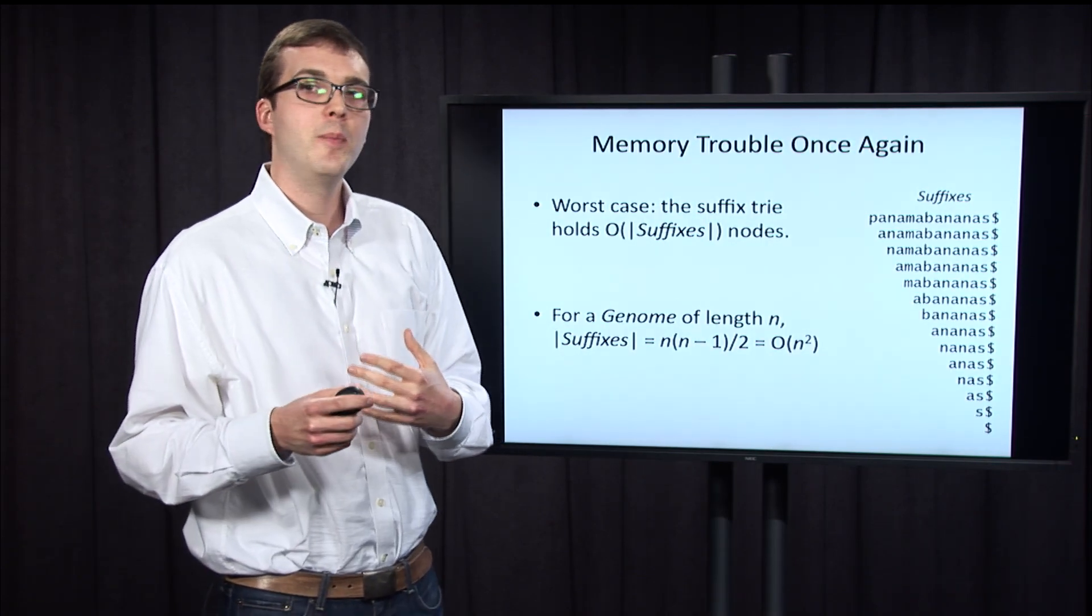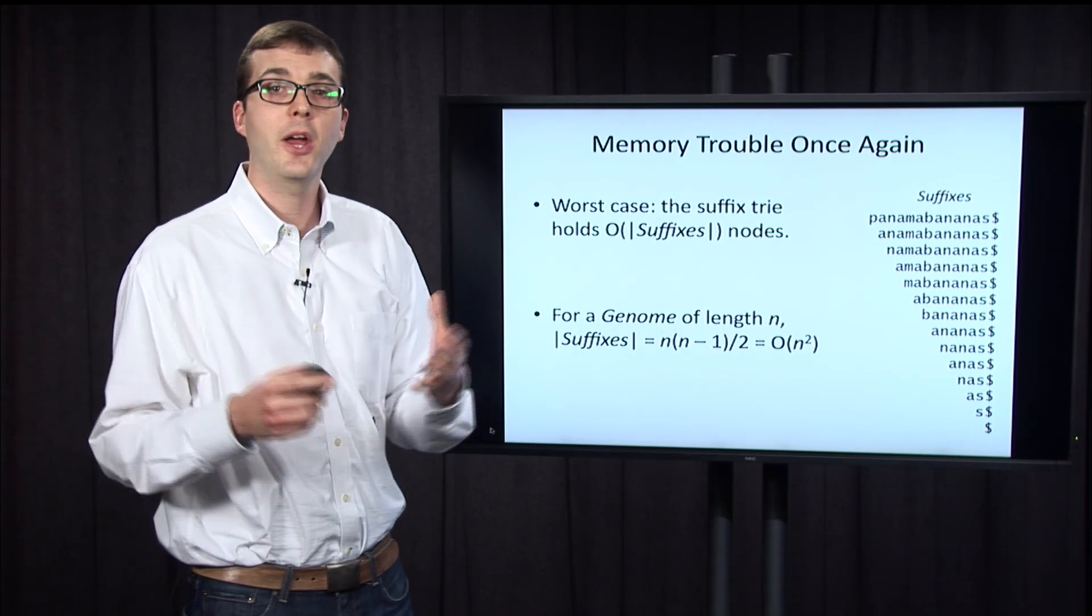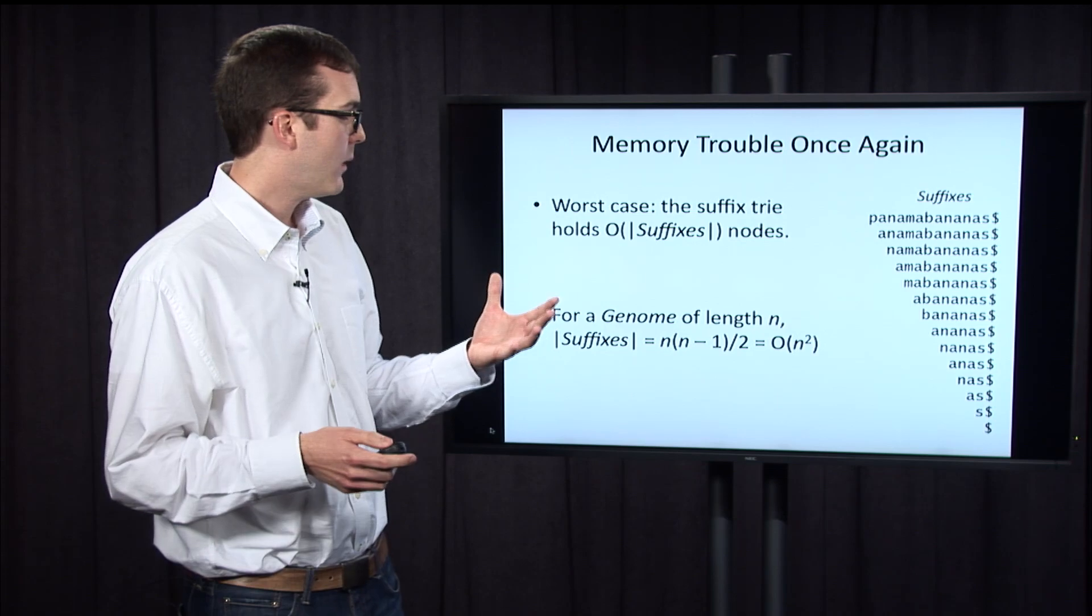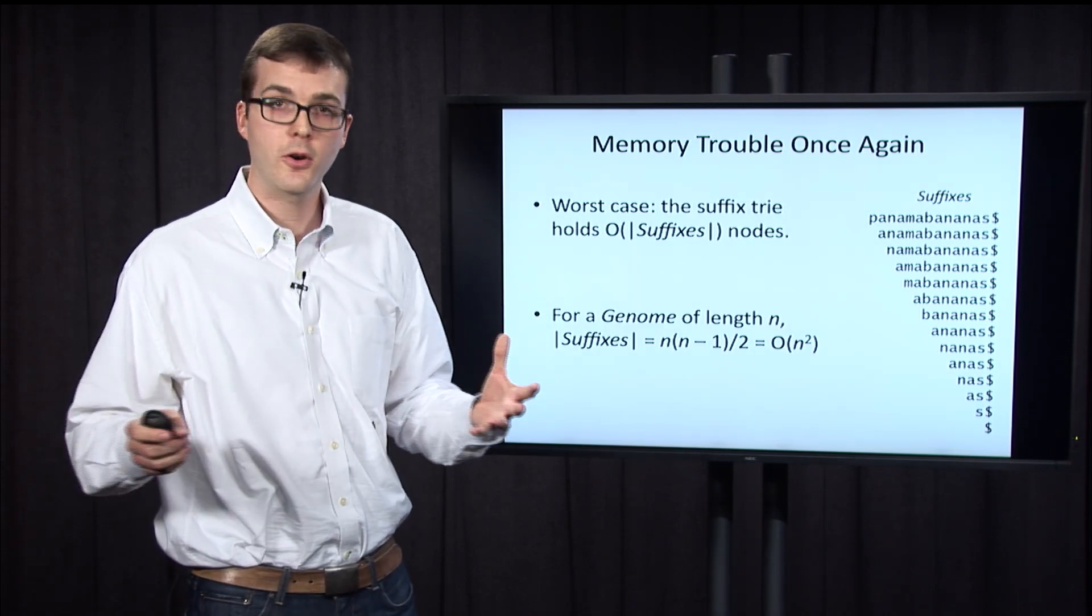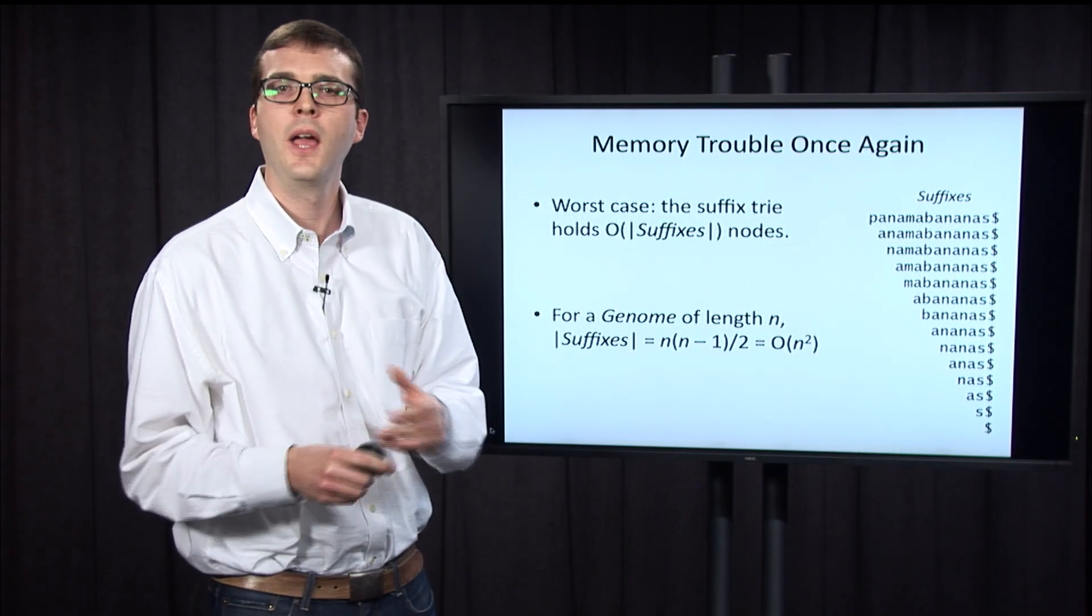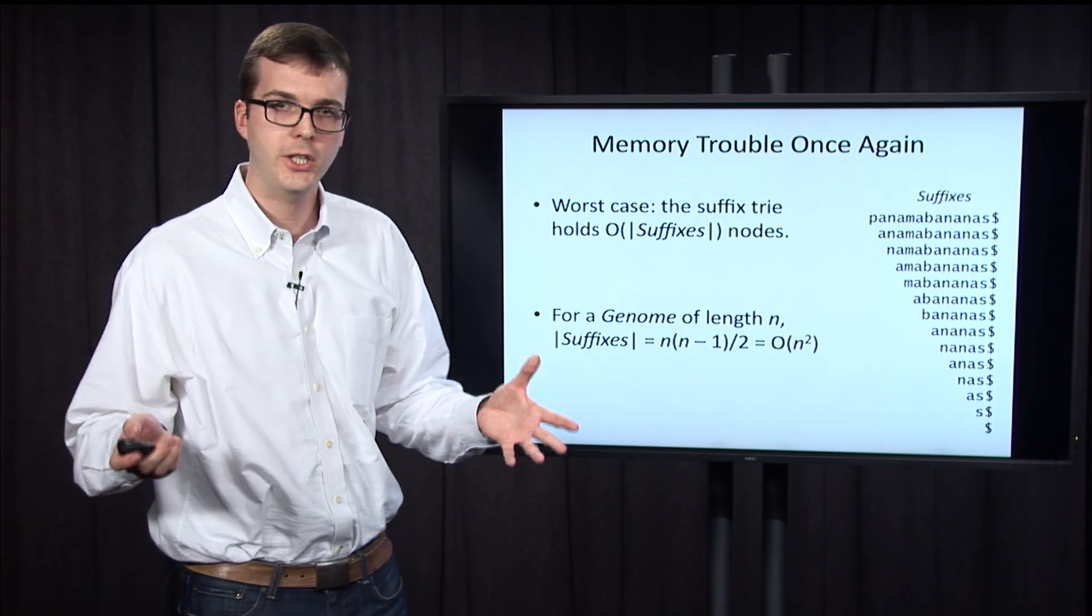The issue, though, would be that you may have noticed that the suffix trie is bigger than the original trie that we had for the patterns. And in fact, in general, it's going to be larger. In a worst case, it holds the combined length of all suffixes. But the problem is that if the genome has length n, the combined length of suffixes is equal to n times n minus 1 over 2. And that term is big O of n squared. So we're dealing with something that's now quadratic in the length of genome. And this is not going to be practical for a real genome.